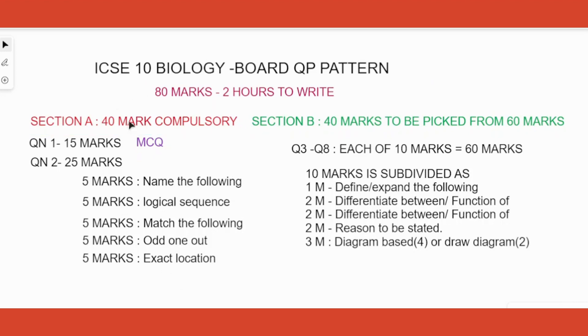Section A is a compulsory section where Question 1 is all MCQ - 15 questions, all MCQ. Now this MCQ can be from any of the chapters, there is no exclusion. Question 2, 25 marks, consists of five different sections: name the following, logical sequence, match the following, odd one out, and exact location.